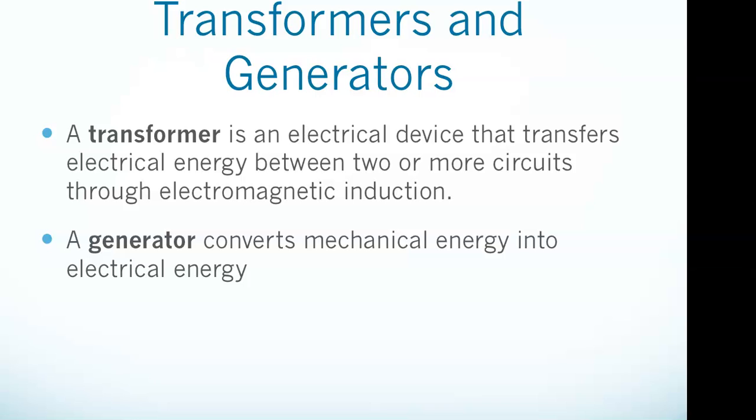A generator converts mechanical energy into electrical energy, while a motor does the opposite - it converts electrical energy into mechanical energy. Both devices work because of electromagnetic induction, which is when a voltage is induced by a changing magnetic field. So with generator, what we wanted to hear was that a generator converts mechanical energy into electrical energy.